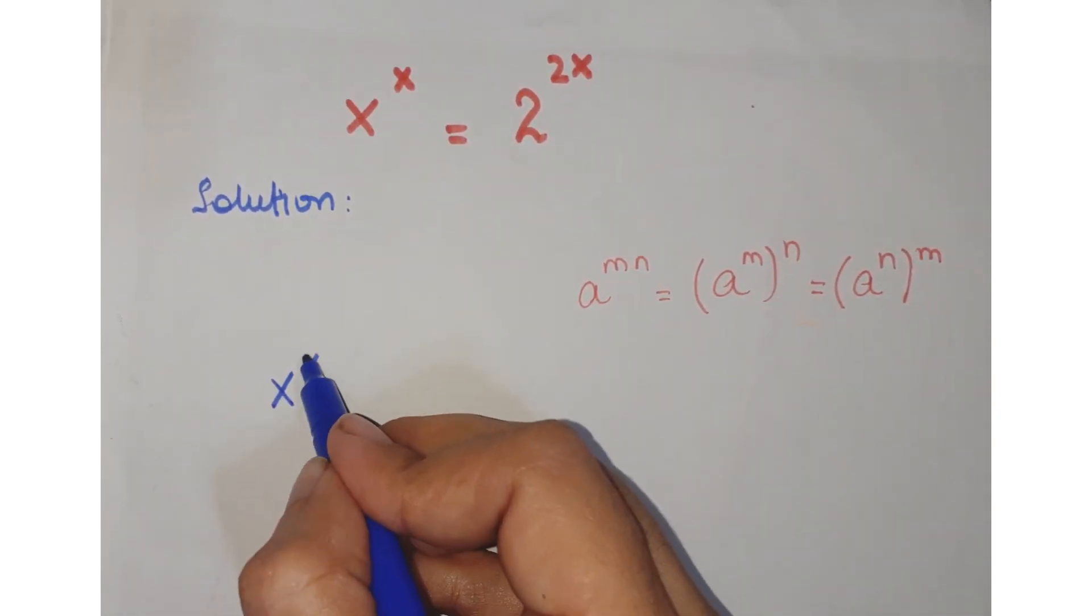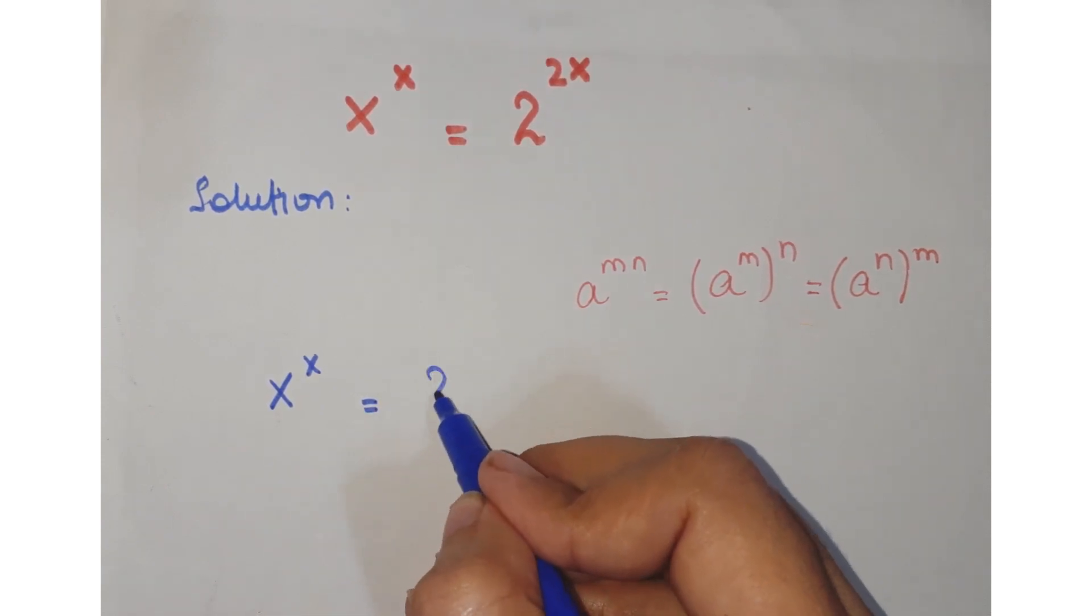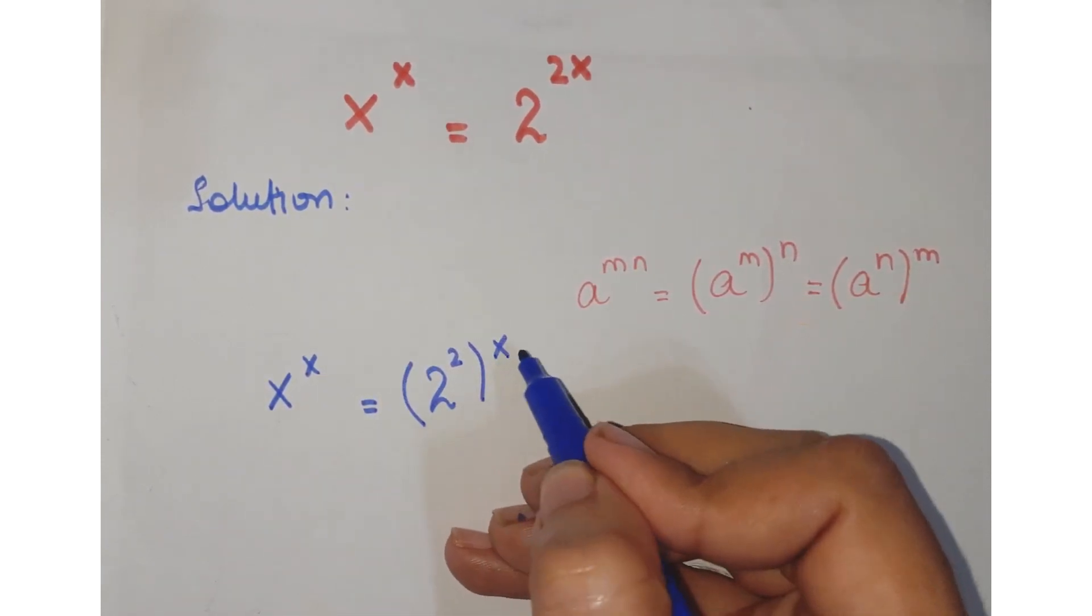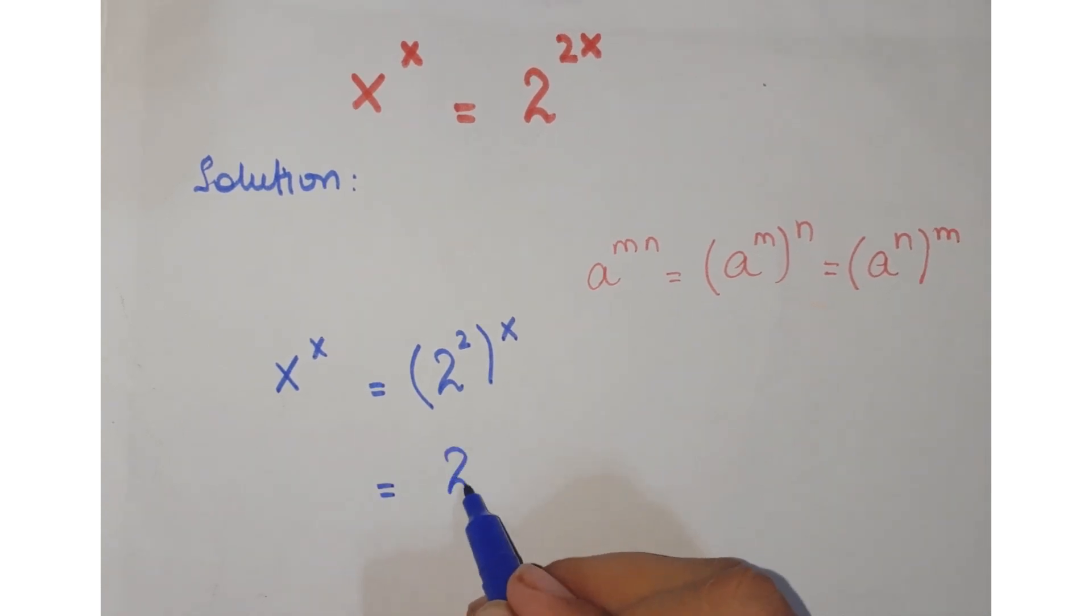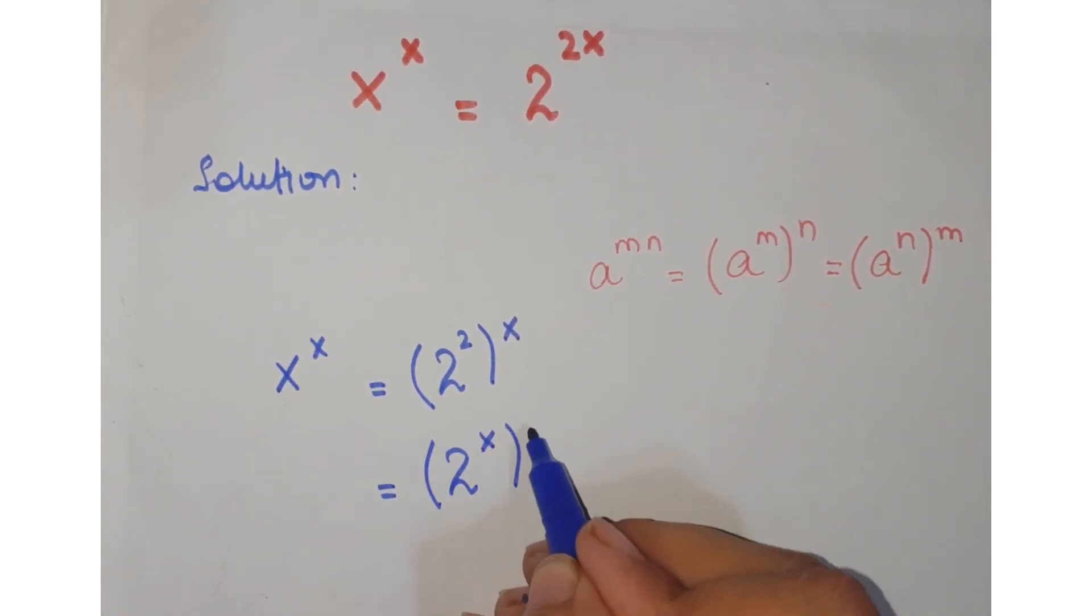So we can write this 2 to the power 2x as 2 to the power 2, bracket x, or further you can write it as 2 to the power x, whole bracket 2.